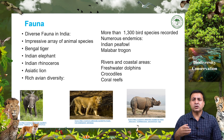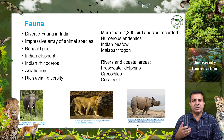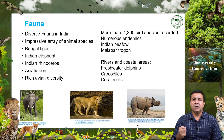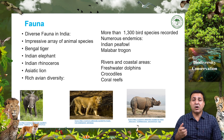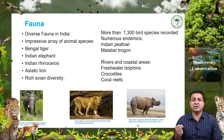India also boasts an impressive array of animal species, including iconic megafauna such as Bengal tigers — our national animal — Indian elephants, one-horned rhinoceros, and Asiatic lions. The country is also rich in avian diversity with more than 1,300 to 1,400 bird species recorded, including numerous endemics like the Indian peafowl and the Malabar trogon. Additionally, India's rivers and coastal areas harbor diverse aquatic and marine life including freshwater dolphins, crocodiles, and coral reefs.